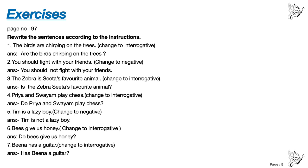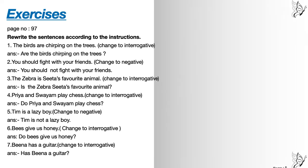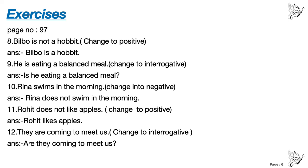Number six: Bees give us honey — change to interrogative. 'Give' is the main verb with no 's' and not 'gave', so use 'do': Do bees give us honey? Number seven: Beena has a guitar — change to interrogative. The helping verb is 'has': Has Beena a guitar? Number eight: Bilbo is not a hobbit — change to positive. Answer: Bilbo is a hobbit. Number nine: He is eating a balanced meal — change to interrogative. Bring the helping verb to the front: Is he eating a balanced meal?